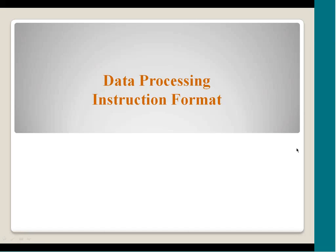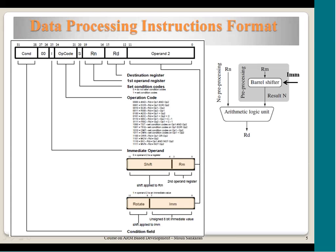Let us see the general format of a data processing instruction. Data processing includes operations like move, AND, XOR, subtract, add, add with carry, and compare — they are all called data processing instructions. The ARM instruction is 32 bits wide — all instructions are 32 bits. Instructions are stored in instruction memory at 4-byte aligned addresses, and R15 — the program counter — fetches each instruction from memory.